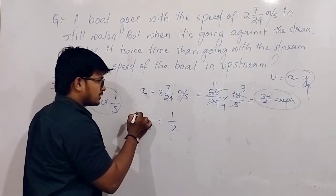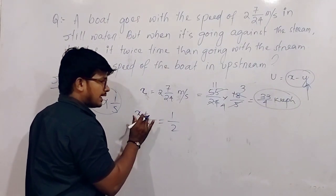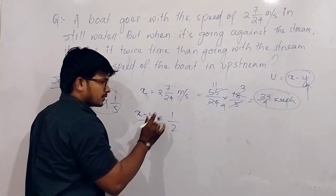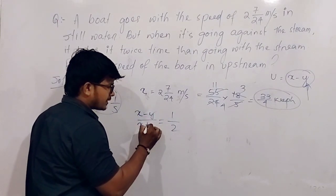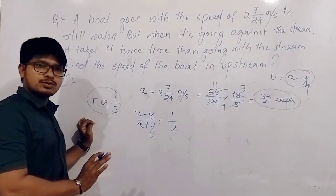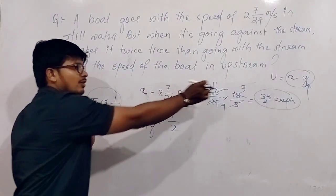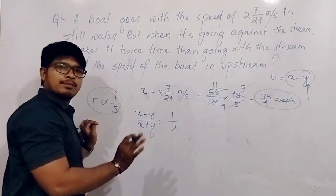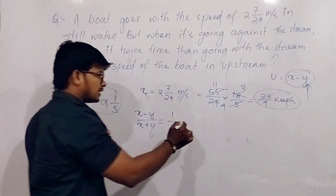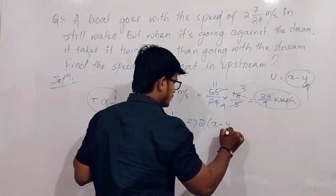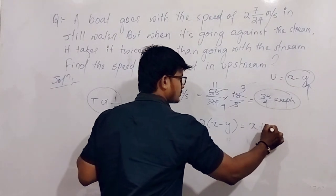What is u? U is x minus y. And d is x plus y. Clear? U is x minus y, x we already know. We can substitute and find y's value. So cross multiply, that is 2 times (x minus y) equals (x plus y), right?